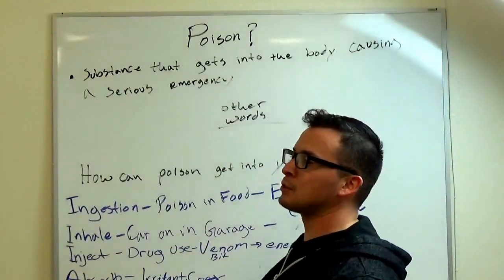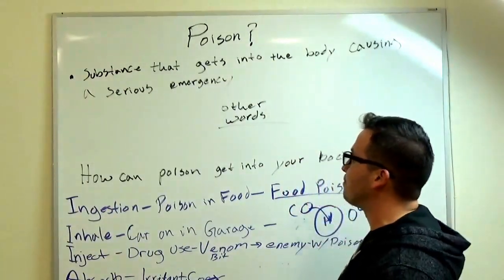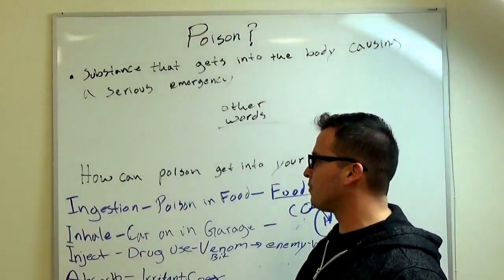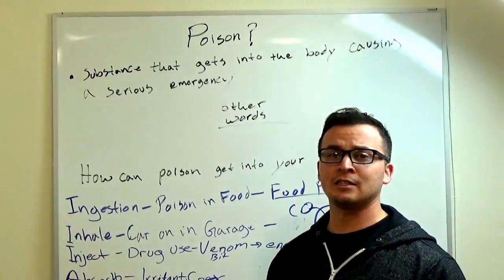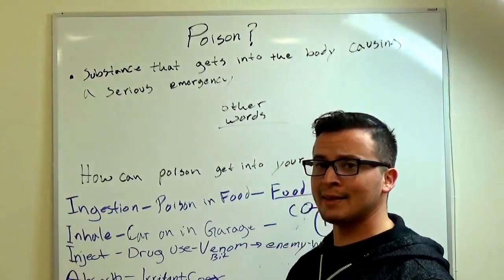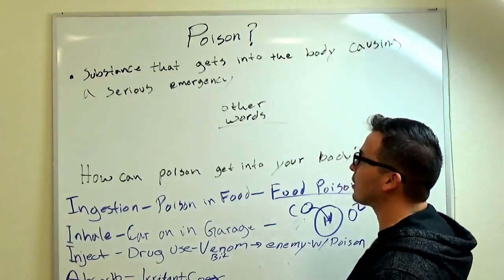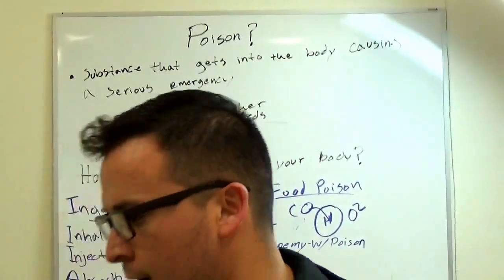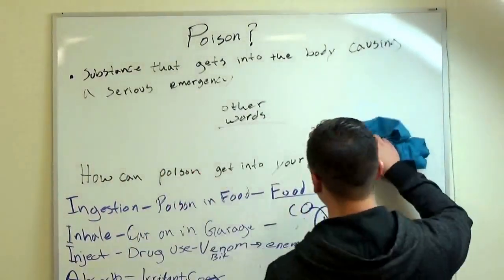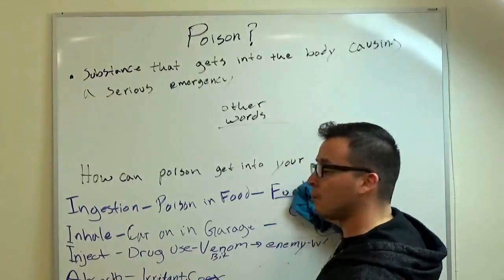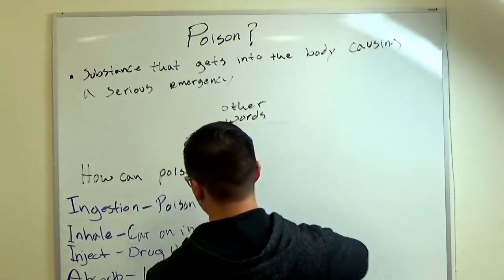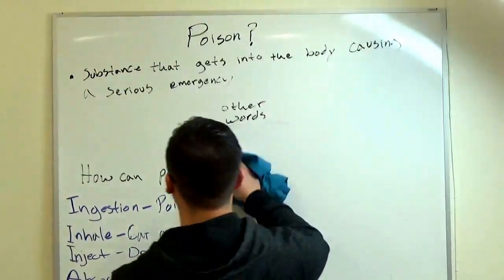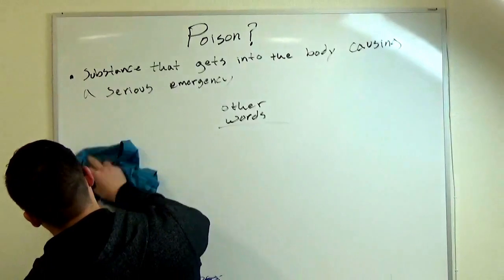So there you have it: poison is anything that gets into your body that makes you sick or ill. There are four different ways for poison to get into your body. Real quick, I think I still have enough time, so I'm going to cover charcoal and dilution, which are two ways that you can get rid of a poison or minimize its effects. Let me erase this and take a two-minute break.